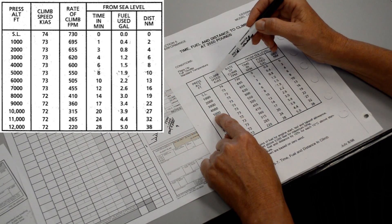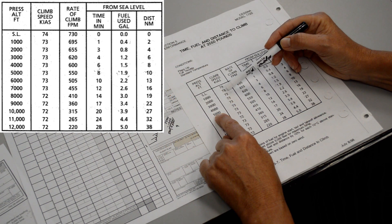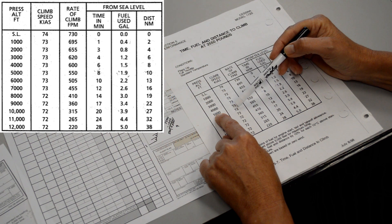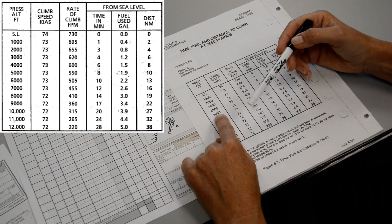And then our climb speed, it shows us that when we first take off, we would climb around a speed of 73 and then we actually get to maintain 73 up to 5,000 and then you would see if you climbed much higher, the speed would actually decrease.